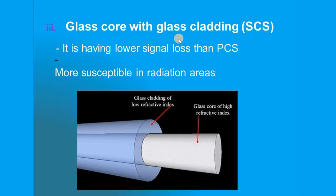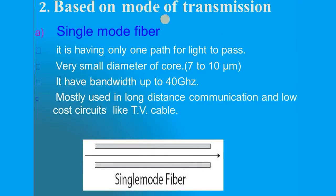The third type is glass core with glass cladding, known as SCS. It has the lowest signal loss compared to PCS and is generally used in high radiation areas. There is the lowest interference or disturbance from the external environment, making it the best choice for use in regions susceptible to radiation.